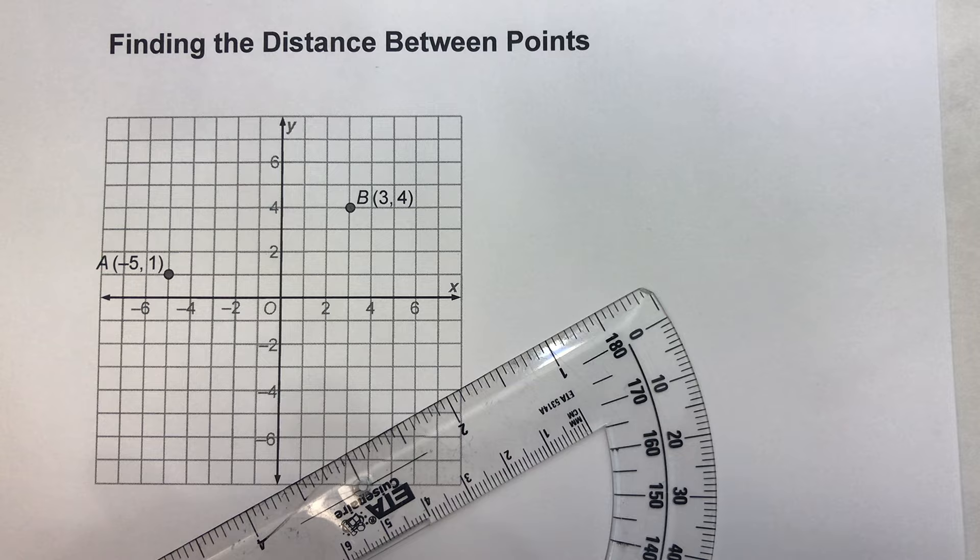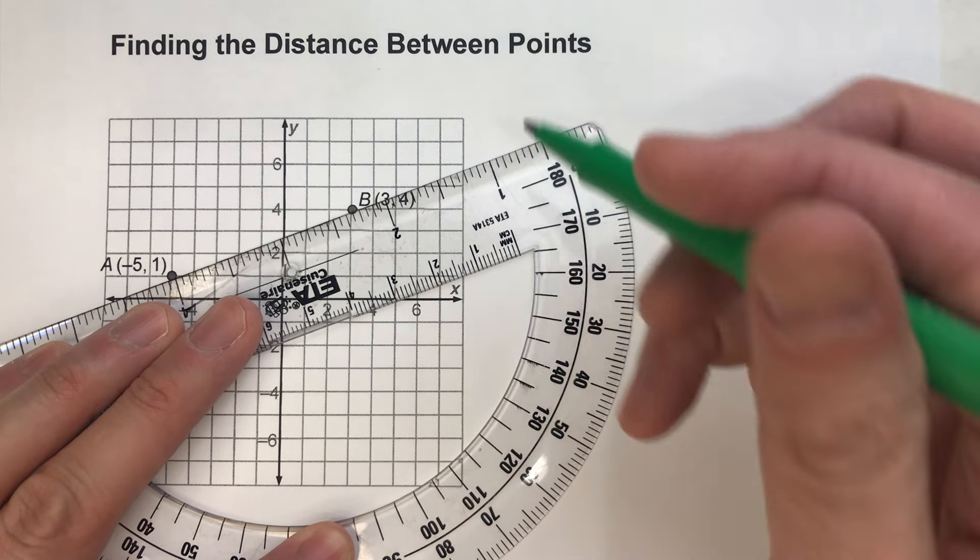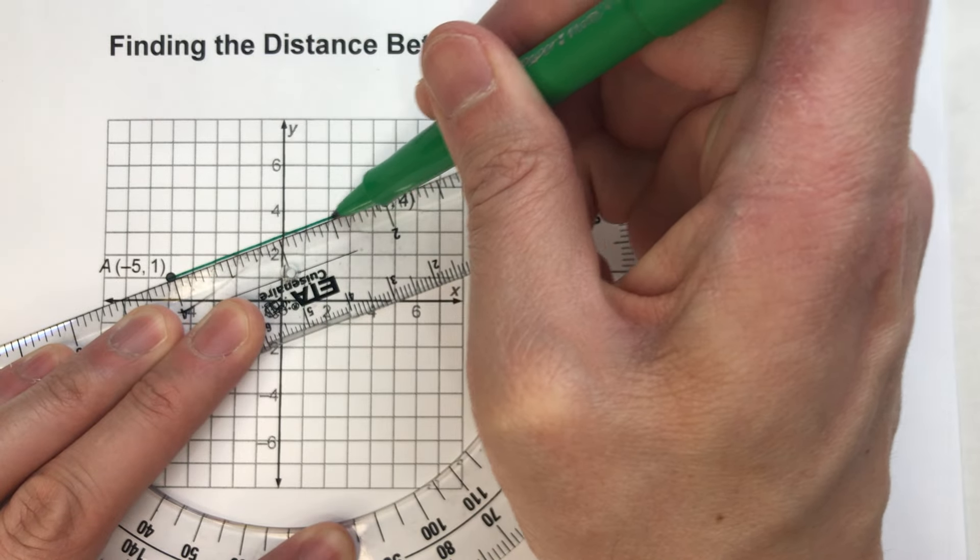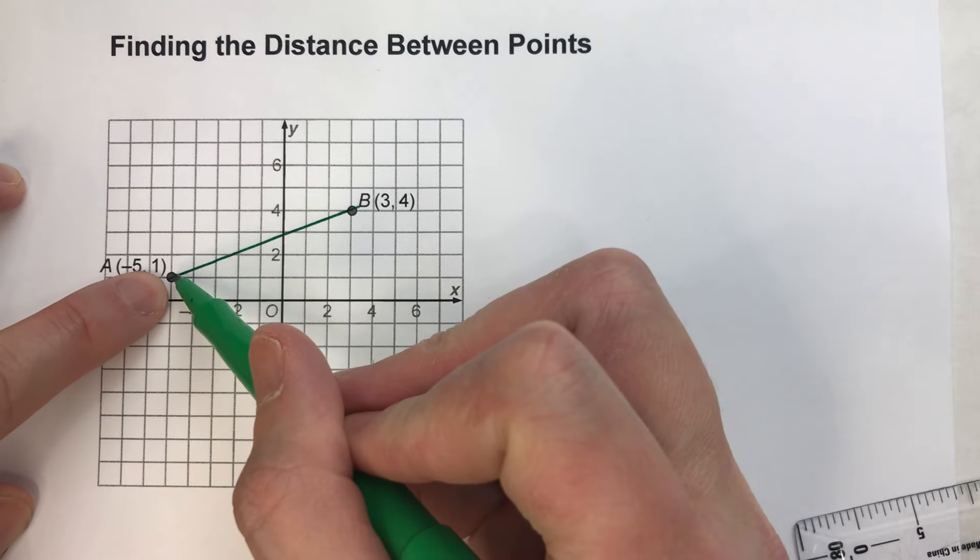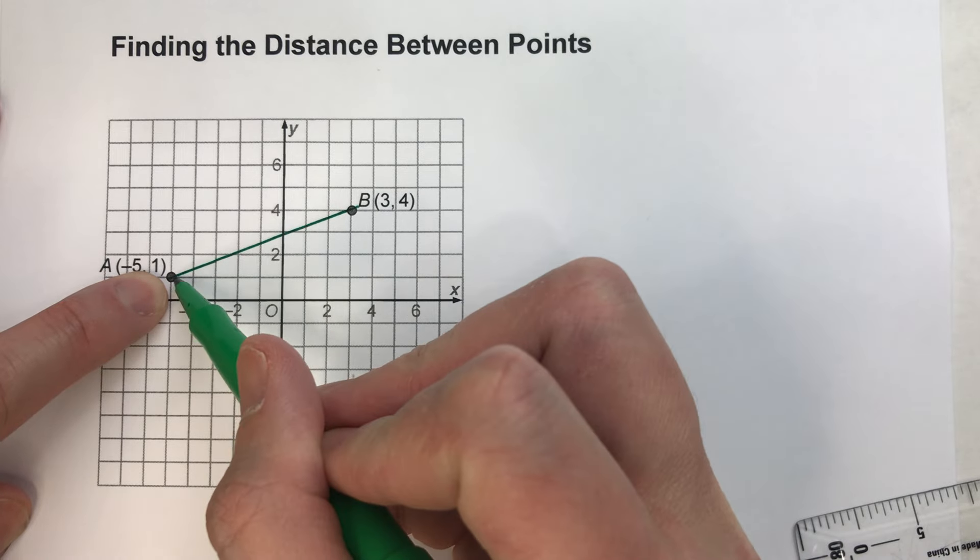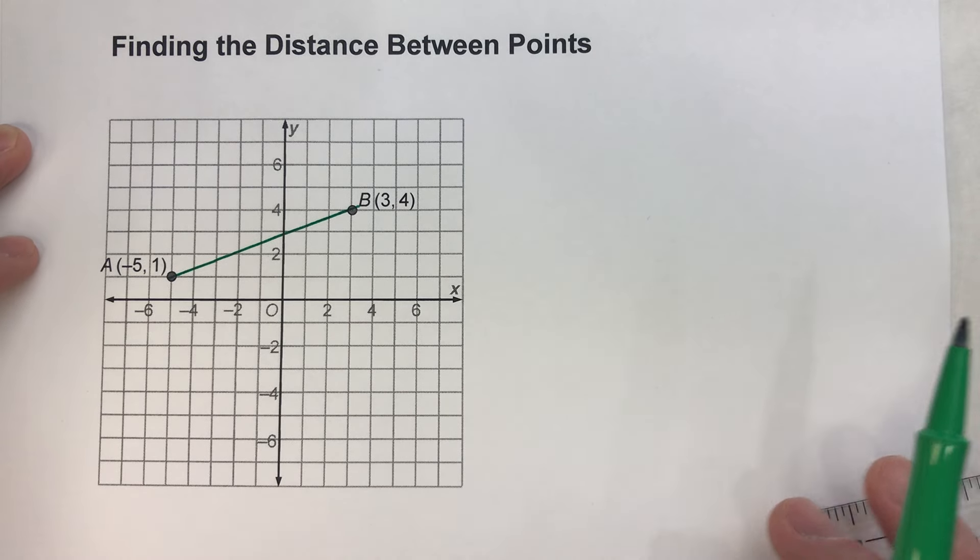What I mean by the distance is, if I connect these two points with a straight line here, because the shortest distance between two points is a straight line, and this distance right here, the length of this line segment, is the distance between the two points. And I want to find the length of that.